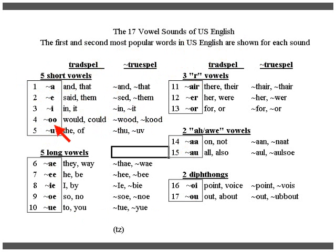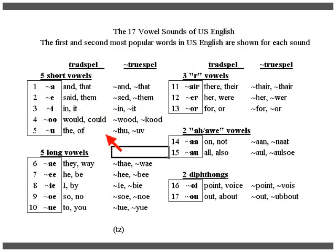This is going to be called the short 'o' sound as in 'would' and 'could' — it's the 'uh' sound, spelled the same way as 'would' and 'could.' The short 'u' is also the 'uh' sound, as in 'the' and 'of.'